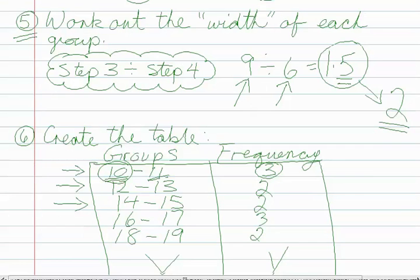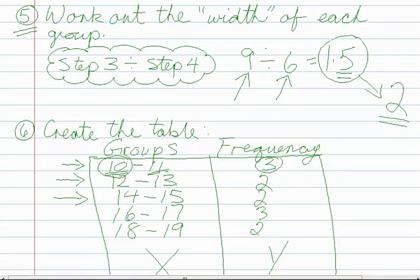In step five we had to do some division. We had to take the answer we got in step three, which was nine, and we had to divide it by the number of groups that we had decided we wanted to use.